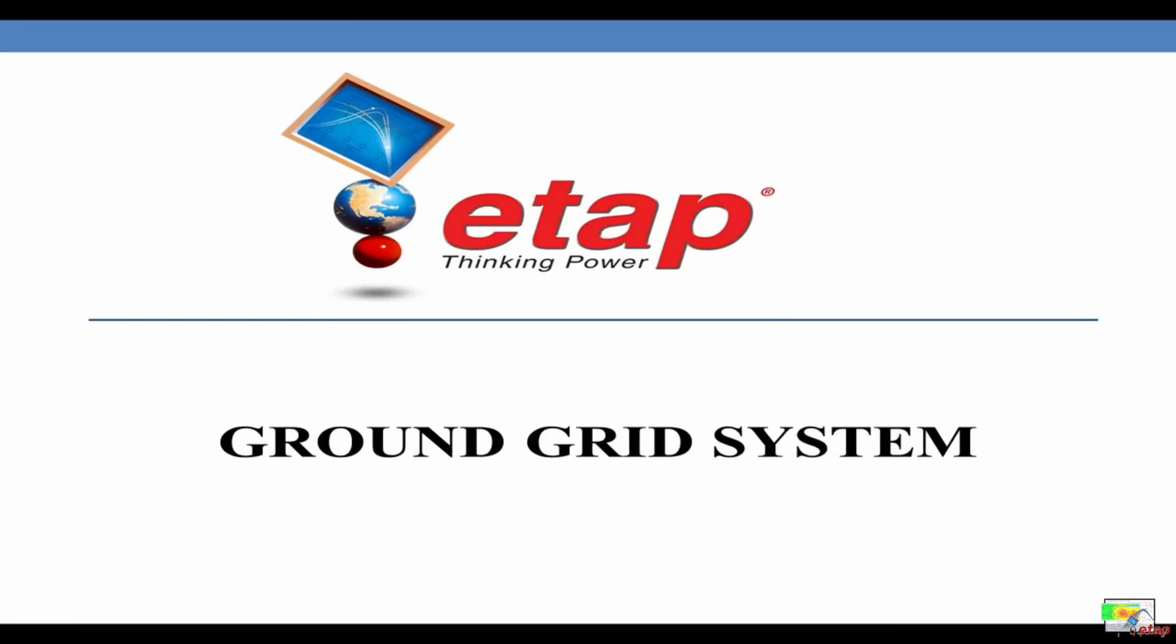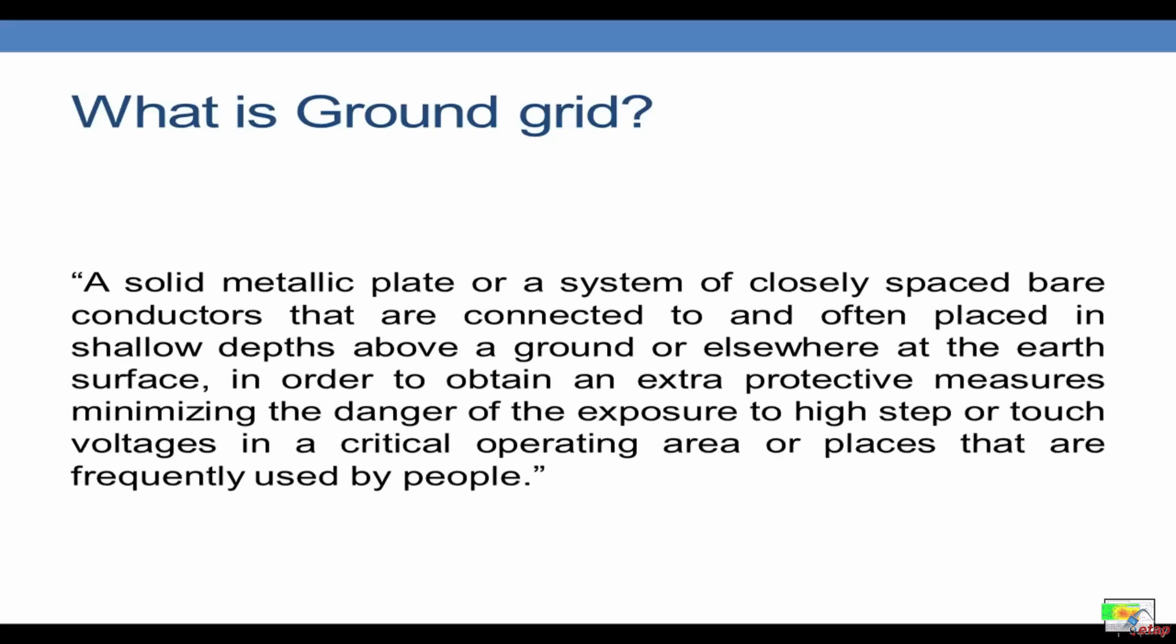In this section, we will study more about ground grid systems or earth matte systems. A solid metallic plate or a system of closely spaced bare conductors that are connected to and often placed in shallow depths above a ground or elsewhere at the earth's surface, in order to obtain an extra protective measure minimizing the danger of exposure to high step or touch voltages in a critical operating area or places that are frequently used by people.